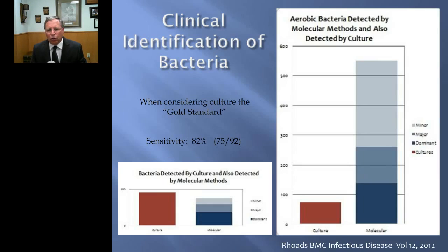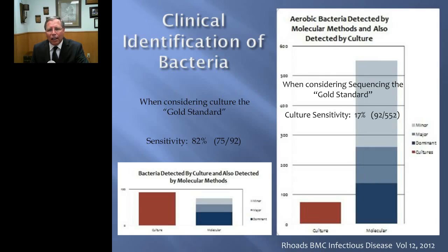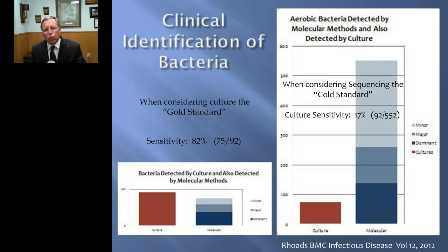Using molecular as the gold standard — not counting anaerobic bacteria since we couldn't do anaerobic cultures — we found 552 different species. That doubled what culture found. The take-home is that cultures show you only about 20% of the microorganisms present in a chronic wound, and that's why clinically cultures have not helped us heal chronic wounds.